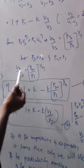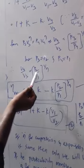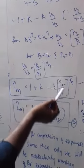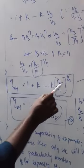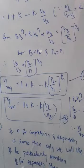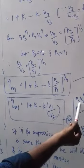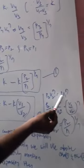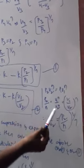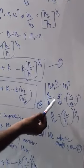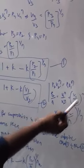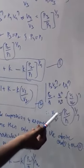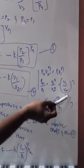Substituting V4 by V3 equals (P2 by P1) to the power of 1/N into the expression, we get volumetric efficiency equals 1 plus K minus K into (P2 by P1) to the power of 1/N. From the polytropic gas law, P2 V2^N equals P1 V1^N, so P2 by P1 equals (V1 by V2) to the power of N, and equivalently V1 by V2 equals (P2 by P1) to the power of 1/N.